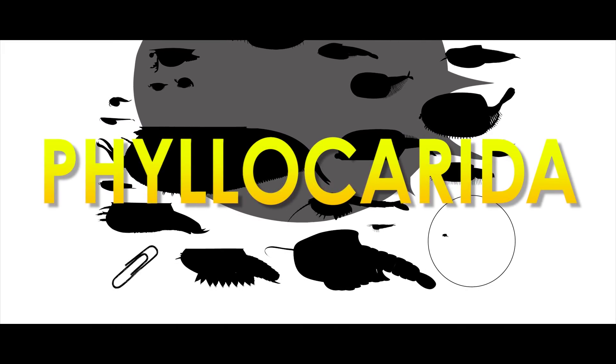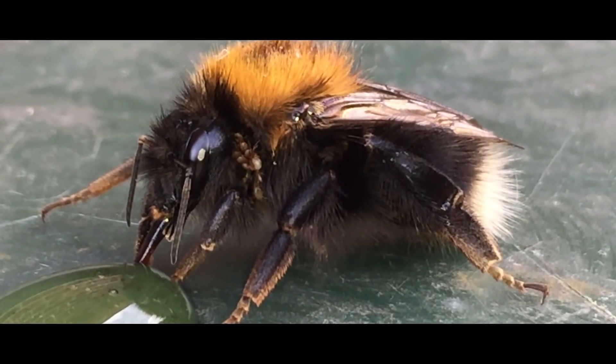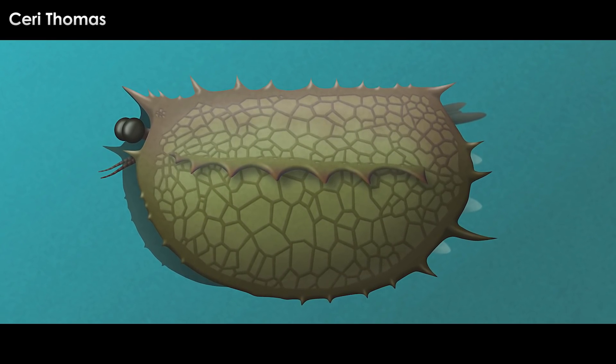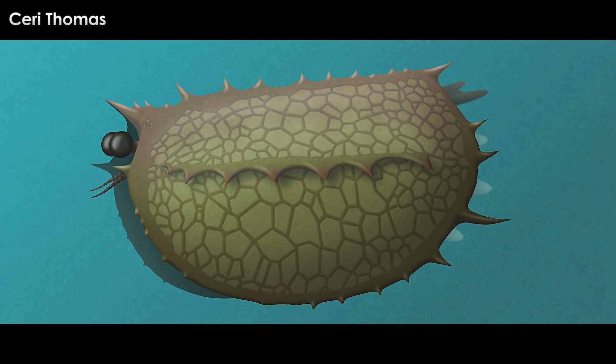These things were arthropods, like trilobites, arachnids, insects, crustaceans, and the like, but had a hard sclerotized shell divided in two pieces over their torso.